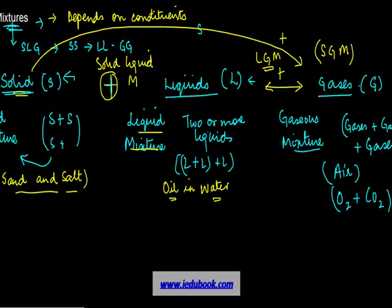To summarize: there are three types of constituents — solid, liquid, and gas. Two or more solids form a solid mixture; two or more liquids form a liquid mixture; two or more gases form a gaseous mixture. When a solid interacts with a liquid, it's a solid-liquid mixture; when a solid interacts with a gas, it's a solid-gas mixture; when a liquid interacts with a gas, it's a liquid-gas mixture.